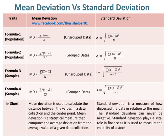In short, mean deviation is used to calculate the distance between the values in a data collection and the center point. Mean deviation is a statistical measure that computes the average deviation from the average value of a given data collection. Whereas, standard deviation is a measure of how dispersed the data is in relation to the mean. The standard deviation can never be negative, and it plays a vital role in finance as it is used to measure the volatility of a stock.